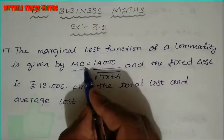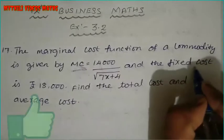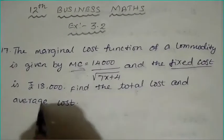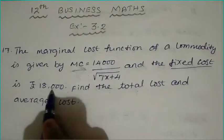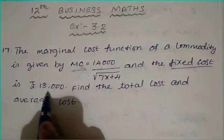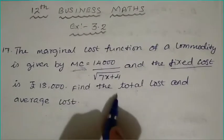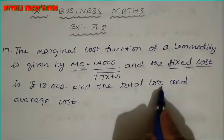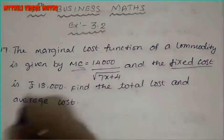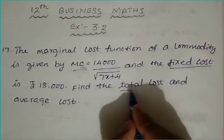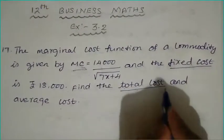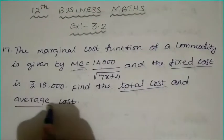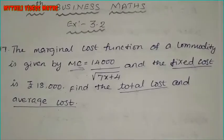The marginal cost value is given. The fixed cost is Rs. 18,000. From these, we need to find the total cost and the average cost.